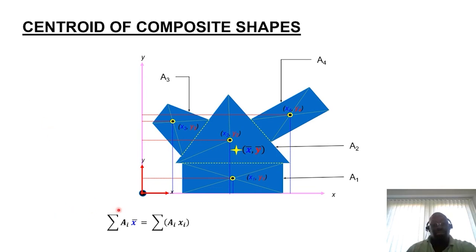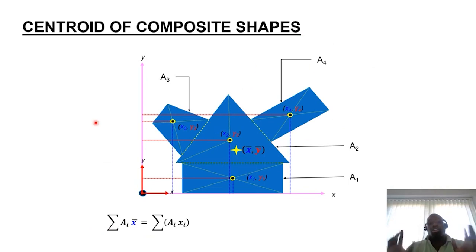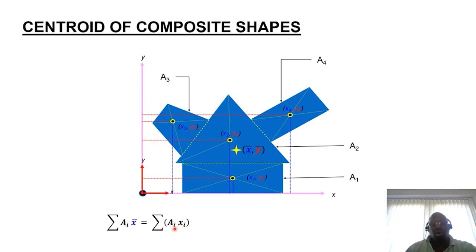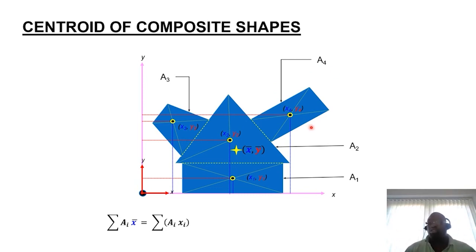This formula states that sigma A times x-bar equals sigma of (Ai times xi). Sigma represents the sum — so the total sum of all the individual areas that constitute the total area of the form, times the global coordinate in terms of x (x-prime or x-bar), equals the sum of the individual first moments of the segmented forms. That will be: area one times x one, plus area two times x two, plus area three times x three, plus area four times x four. You do likewise for the y-coordinates.